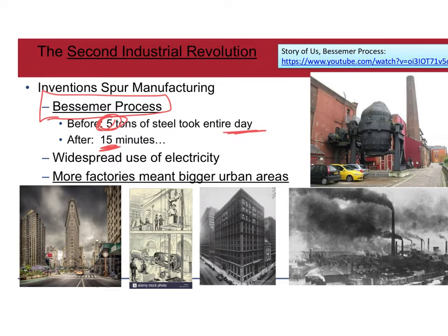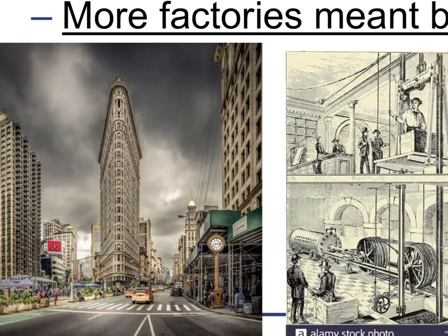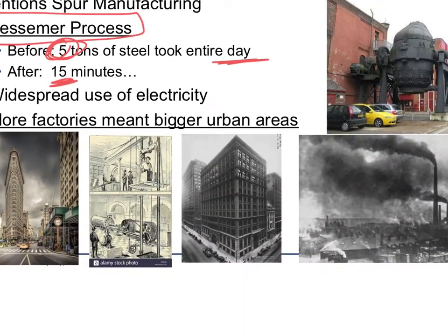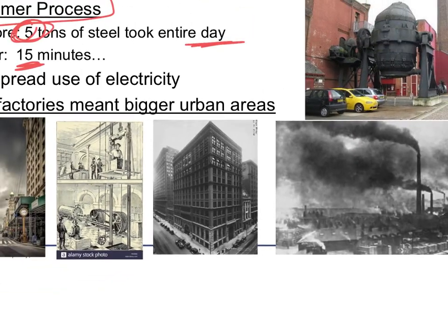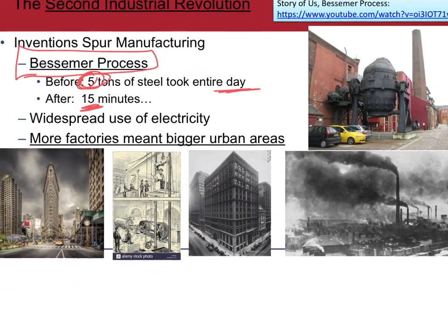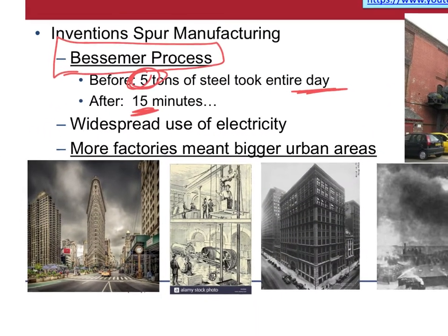Imagine how much more affordable steel becomes. Now you can have buildings so tall they reach the sky. Before, wood buildings couldn't get much taller than six stories, and brick buildings had similar limits. But with cheap, affordable steel, you can build very tall. The Bessemer process is one of the most important discoveries of the era and is what makes Andrew Carnegie so wealthy — he produces so much steel that he dominates the entire industry.